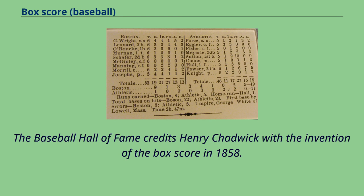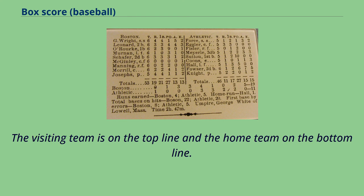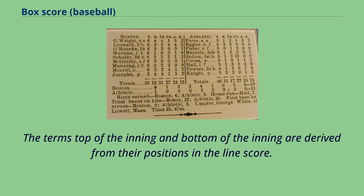The Baseball Hall of Fame credits Henry Chadwick with the invention of the box score in 1858. The line score is a two-line chart that reports each team's run totals by inning, and total runs, total hits, and total errors on a line. The visiting team is on the top line and the home team on the bottom line. The terms 'top of the inning' and 'bottom of the inning' are derived from their positions in the line score.